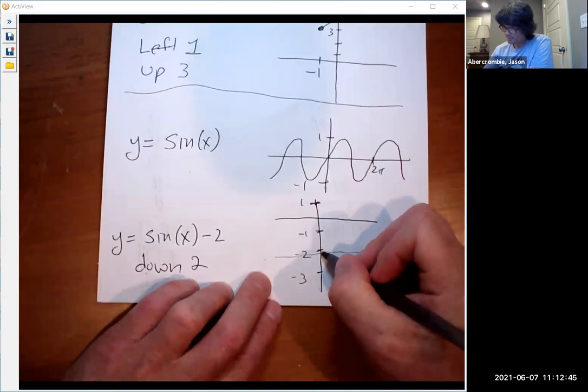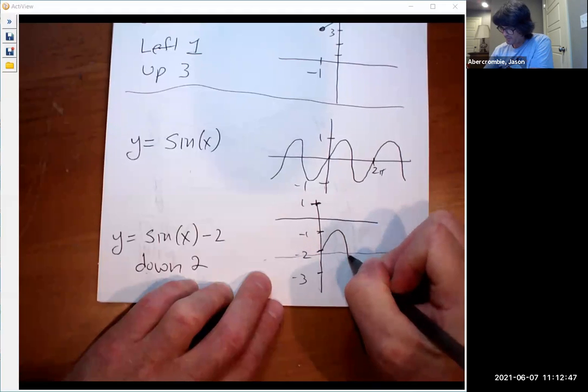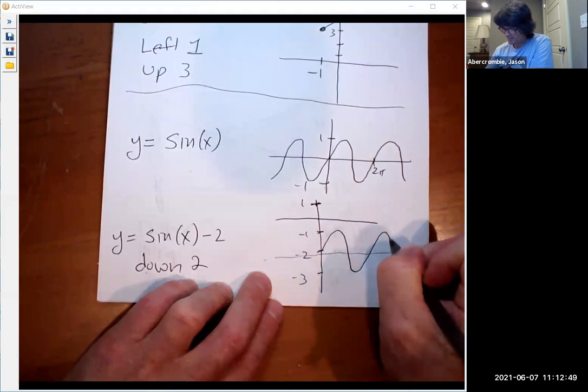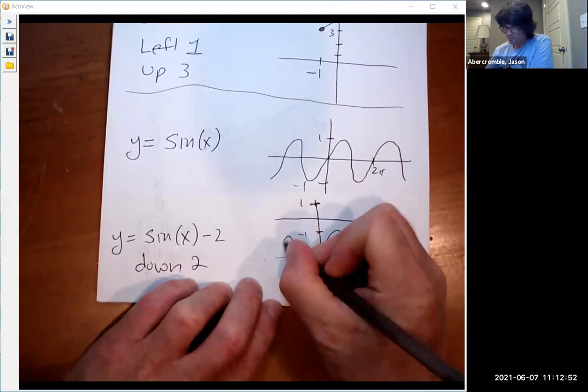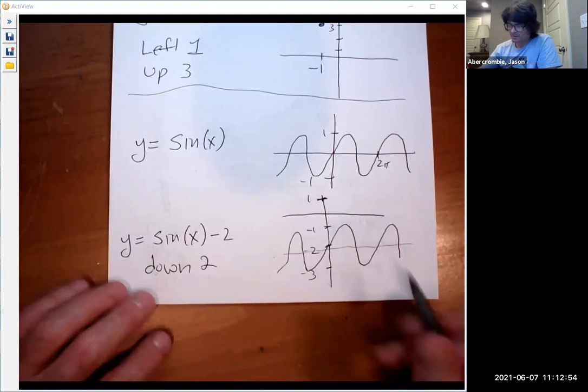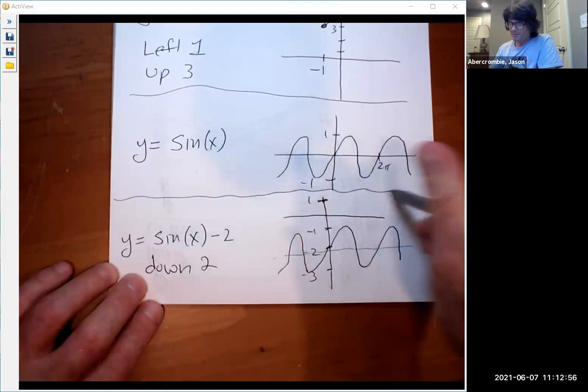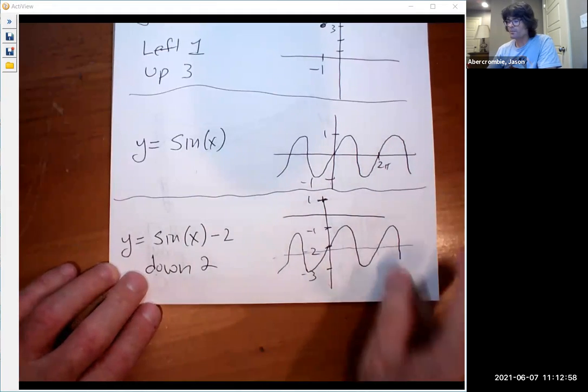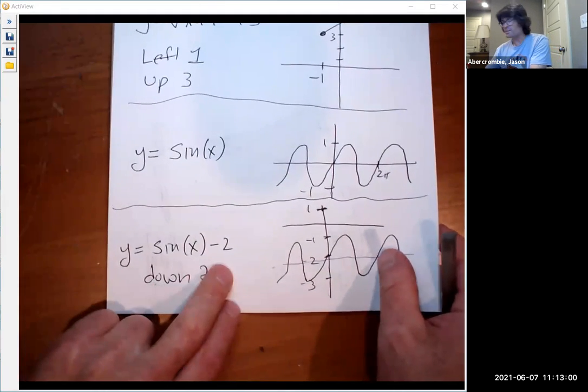And we go up to negative 1, down to negative 3, and kind of oscillate like that. The whole thing is shifted down 2. And I'm not drawing a very accurate picture, but I don't really need it right now. The whole thing has gone down 2 because we have minus 2 after the sine.